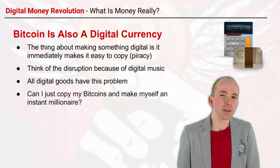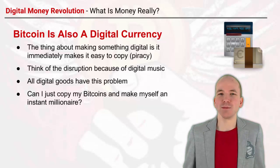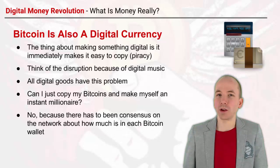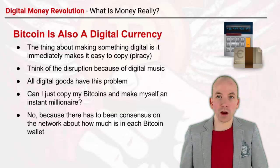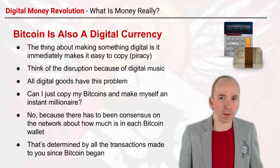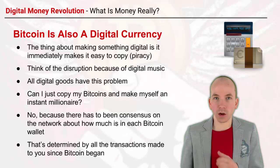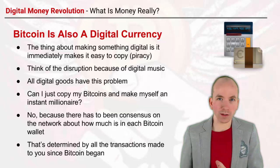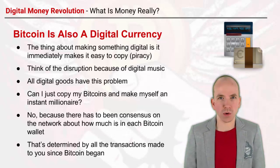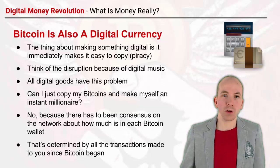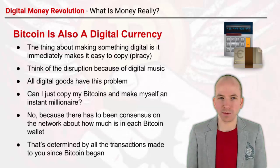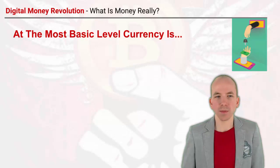So you might ask: can I just copy my bitcoins and make myself an instant millionaire? No, because there has to be consensus on the network about how much is in your Bitcoin wallet. When you make a transaction, that money moves out of your wallet into someone else's, and everyone knows about it — determined by all the transactions that have ever been made. The network tracks where that Bitcoin came from: it came into your wallet from the person that paid you, and they got it from someone else, and so on. Every single transaction is tracked, so you can't magically create bitcoins. You have to prove they were sent to you, and that's all available on the blockchain.